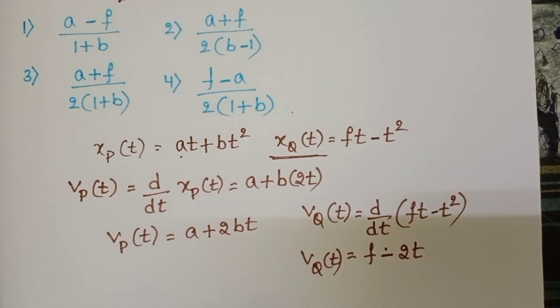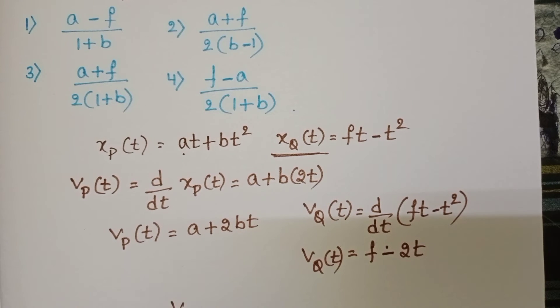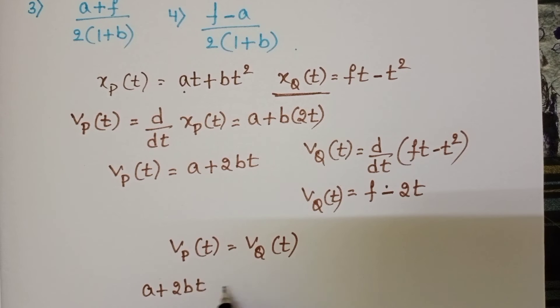The question asks: at what time is the velocity of car P equal to the velocity of car Q? So Vp = Vq. a + 2bt = f - 2t.